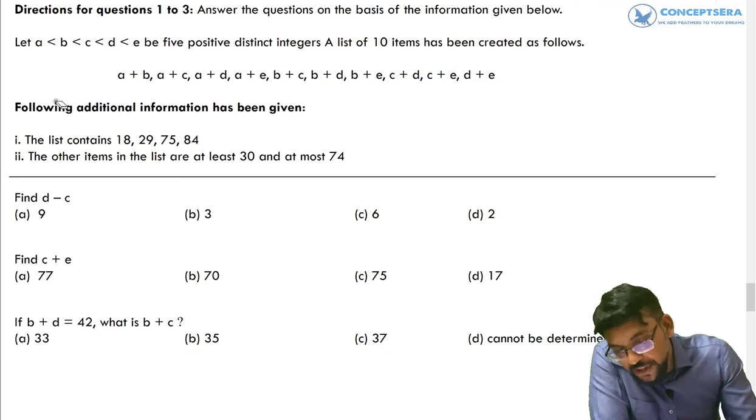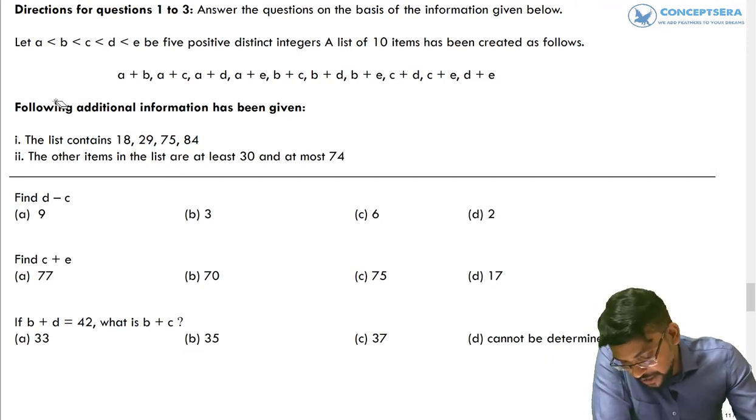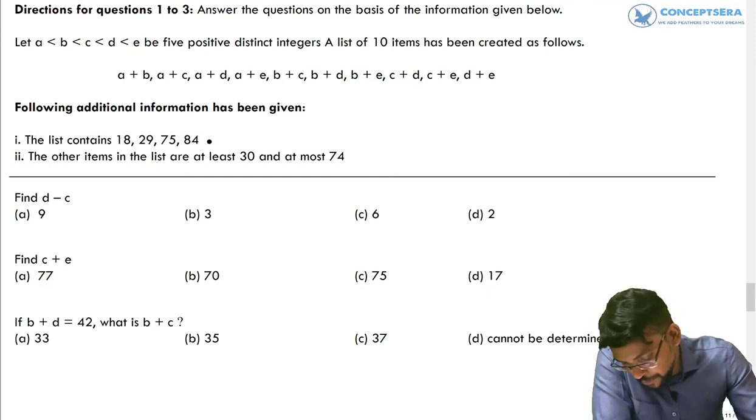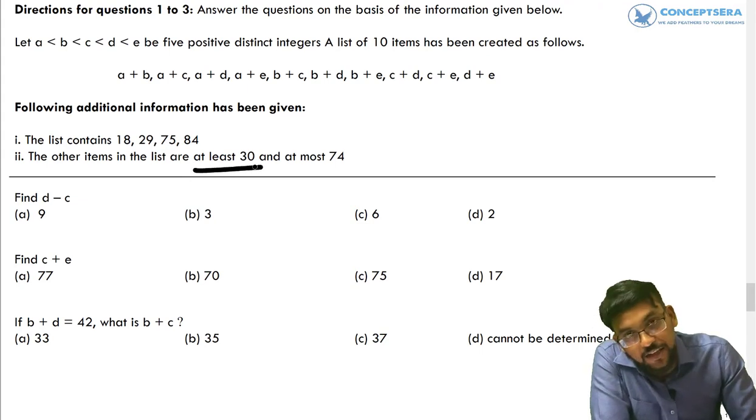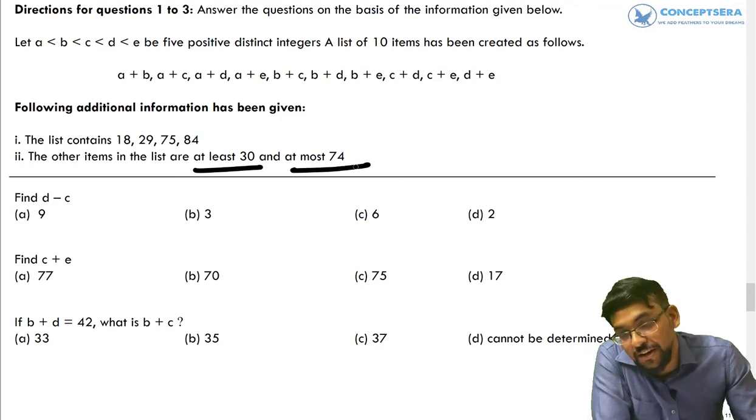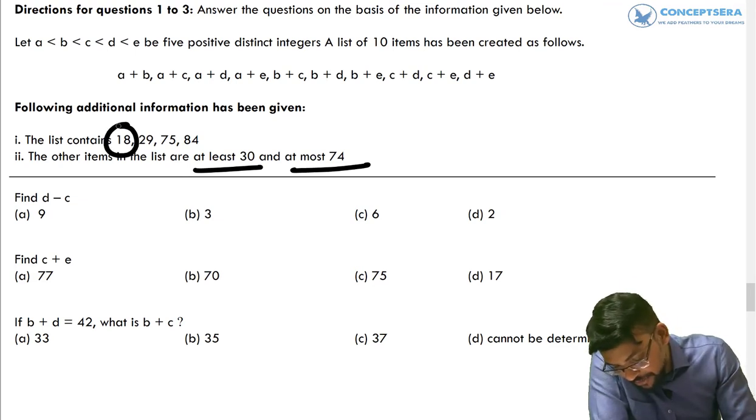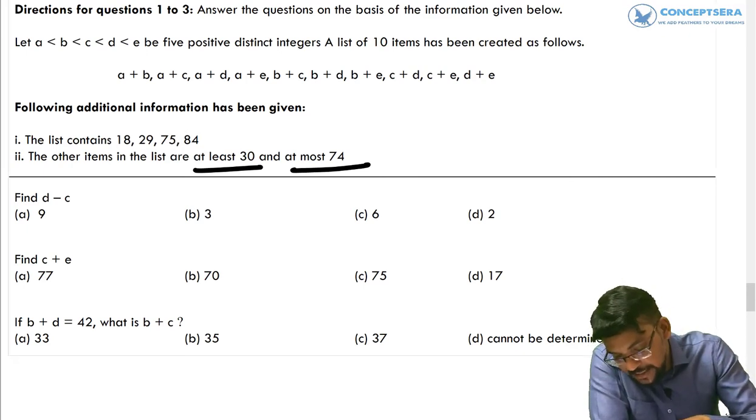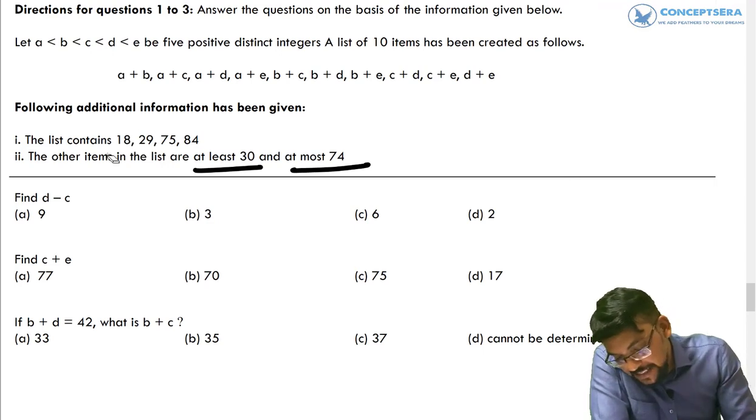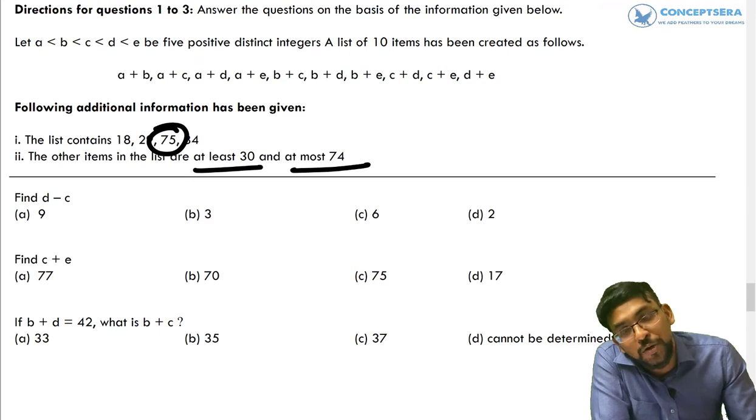So now further information is given to us. The list contains 18, 29, 75 and 84. And second information is the other items in the list are at least 30, that means minimum 30, and at most 74, which is maximum 74. What we can record from here: 18 is definitely a minimum possible number and 84 is a maximum possible number. And similarly, we can say 29 is second minimum possible number and 75 is a second maximum possible number.